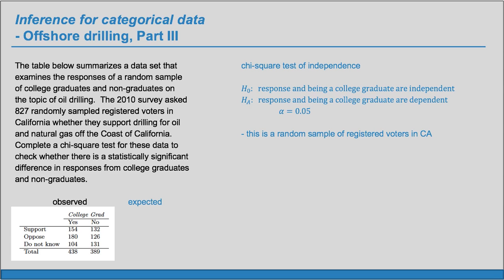To see whether the expected count condition is met, we'll have to find the expected counts. The table gives us the sample values, which are the observed values, and now we need to find the expected values based on our H sub 0. The expected count is the row total times the column total over the table total. So for one cell, that's 286 times 438 over 827, which equals 151.5.